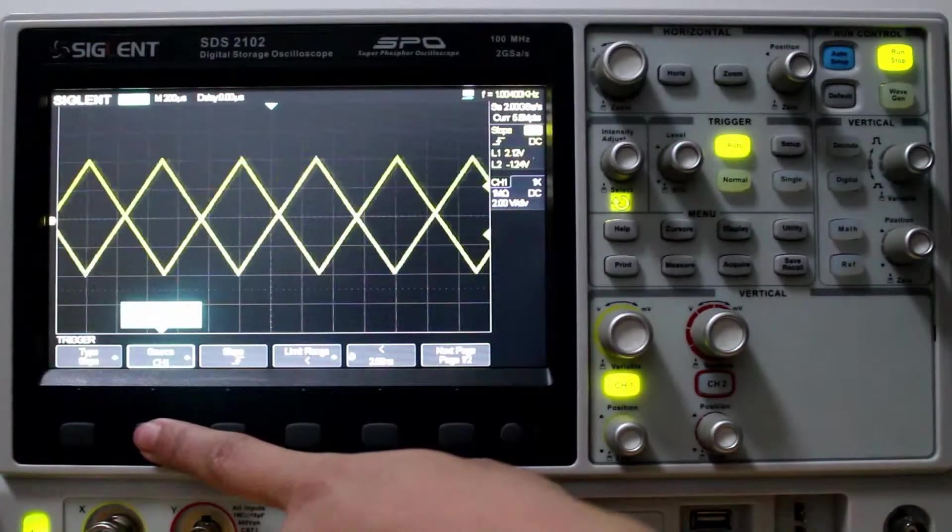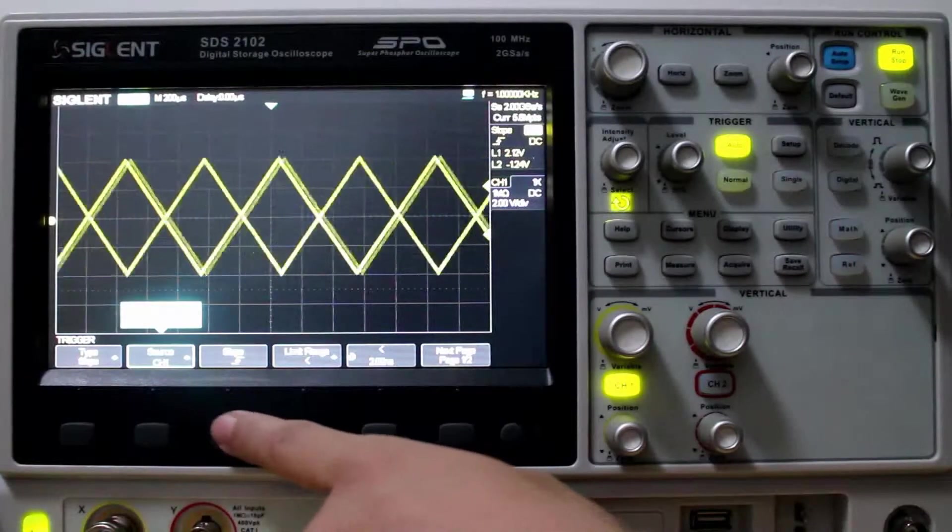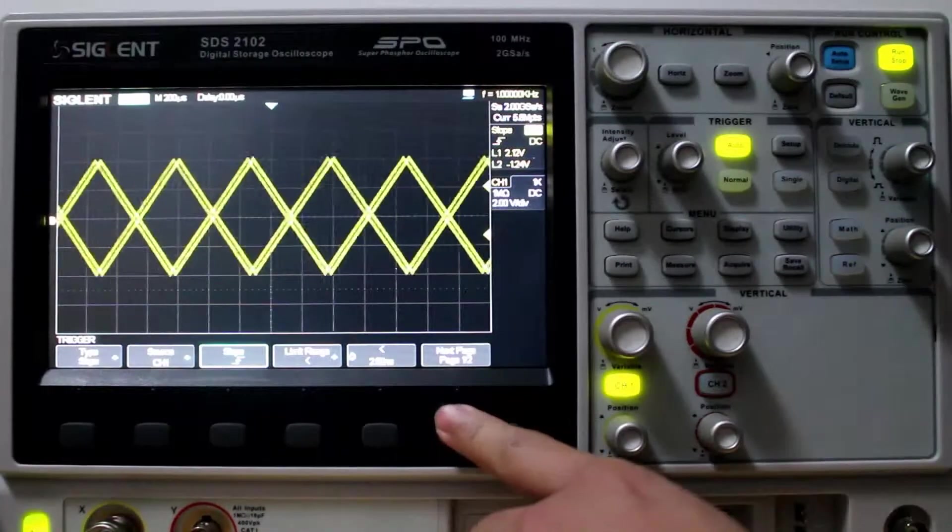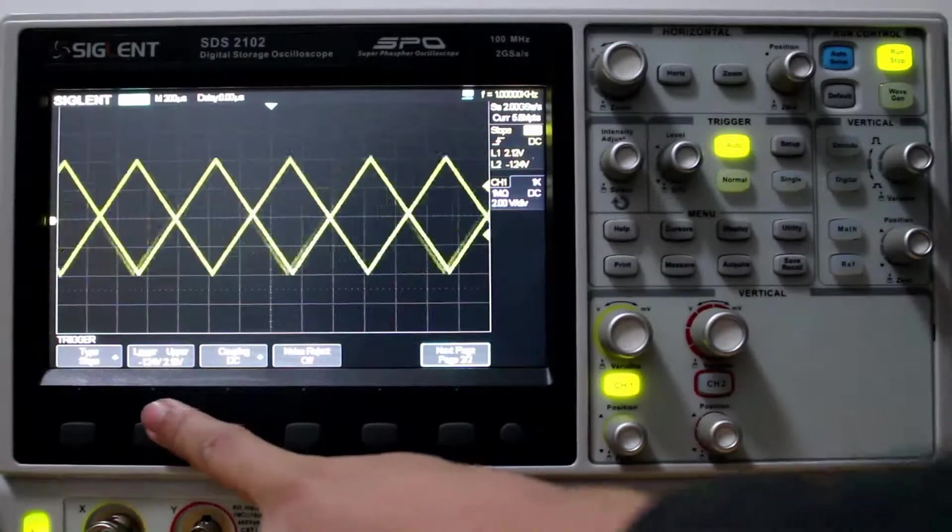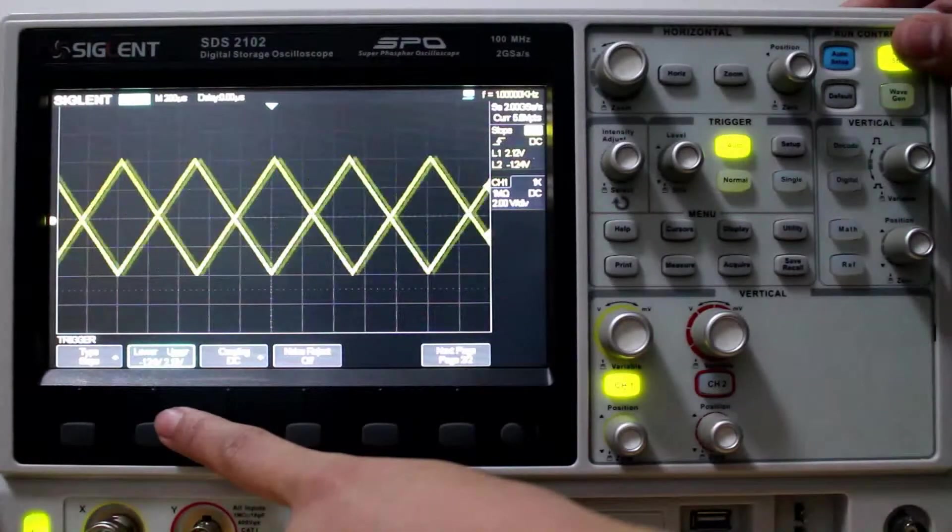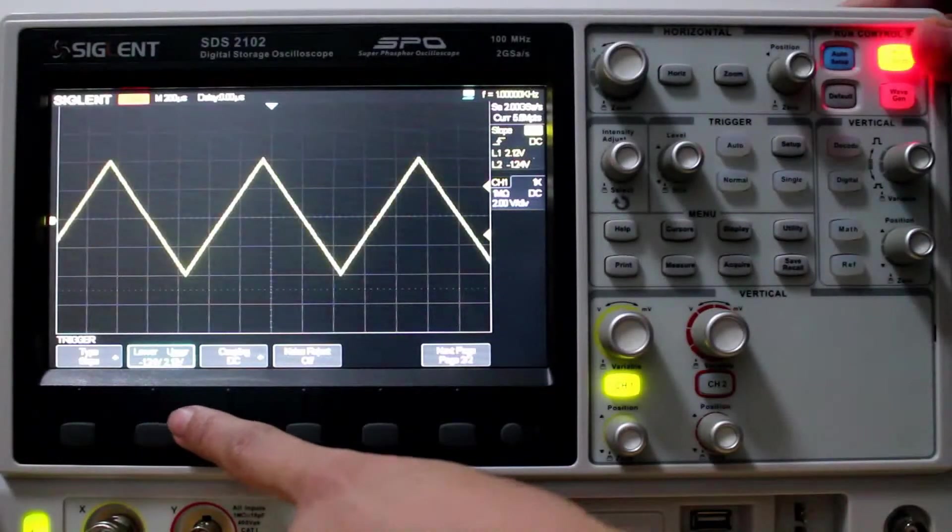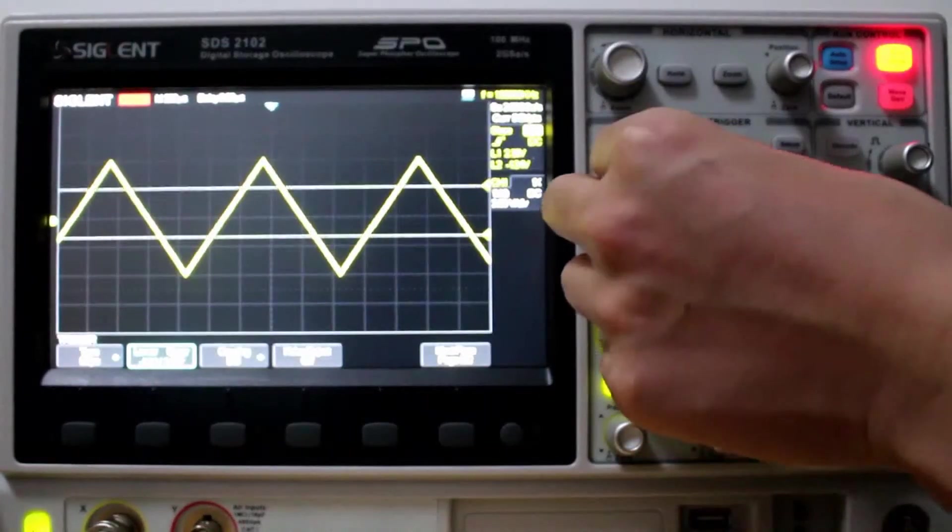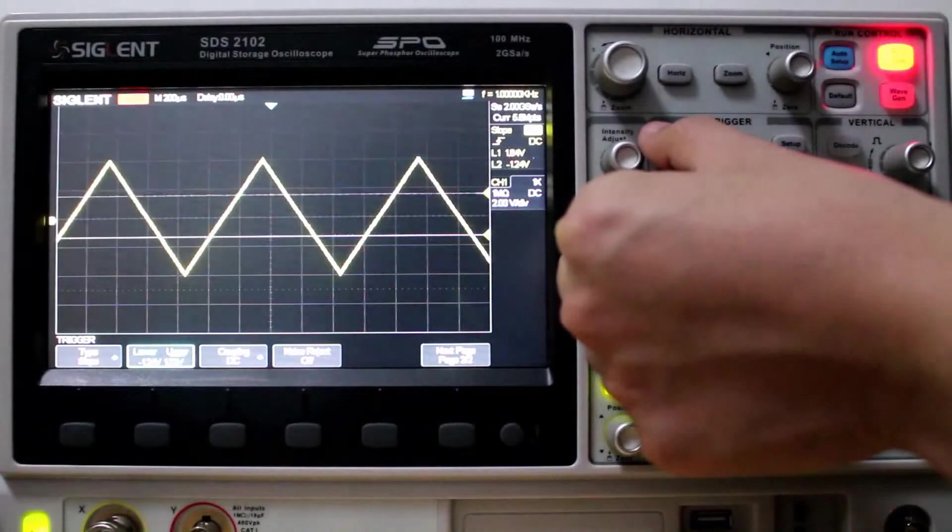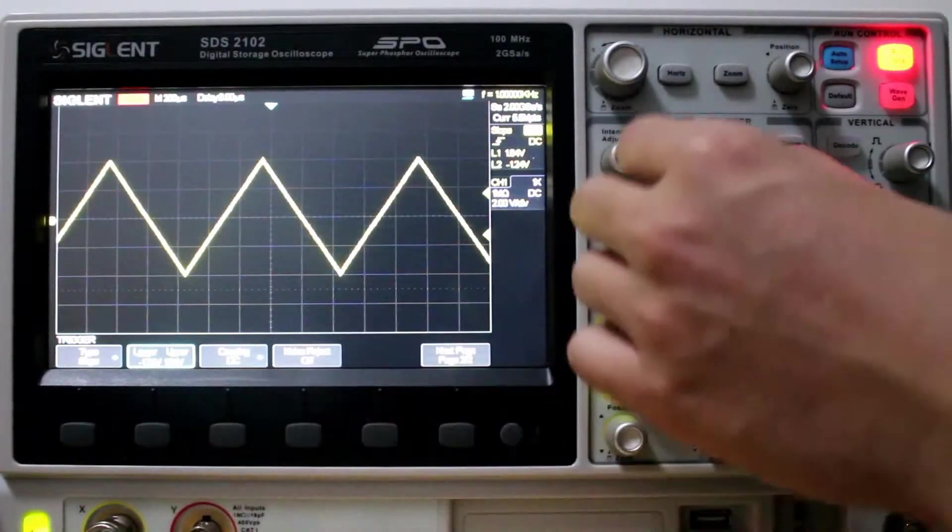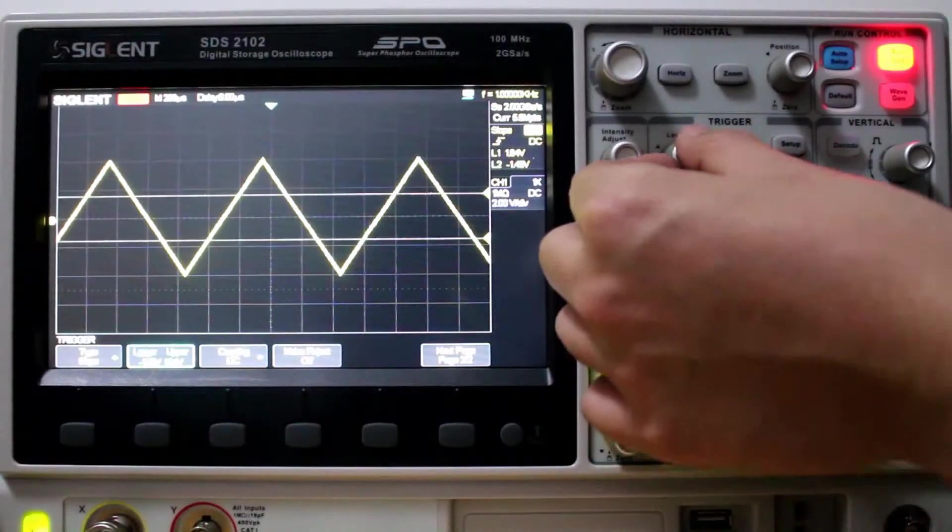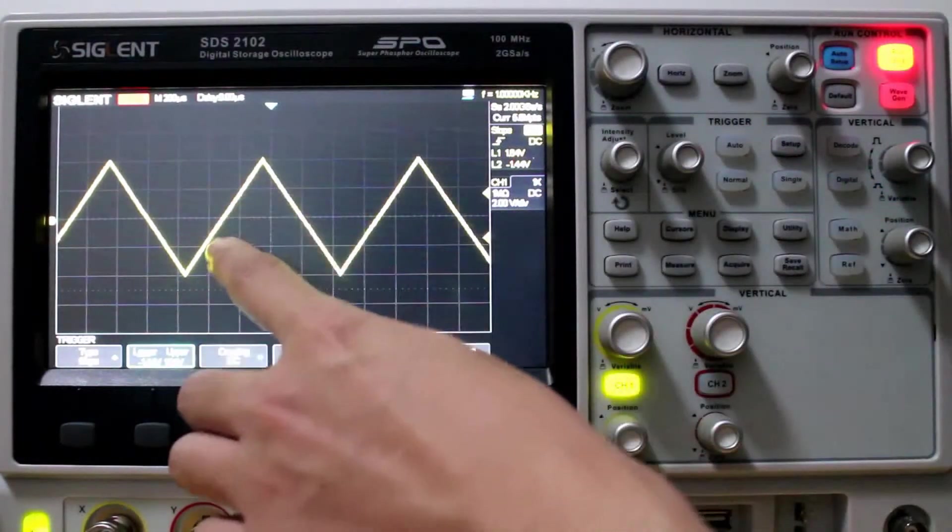Now we're looking at the Slope trigger type. Channel 1. Good. Rising. Let's go to page 2. And we can see we can set, with a Slope trigger type, we can set the upper and the lower range. So we're at 2.12 volts for the upper. And the lower, let's adjust the upper. Now the lower, 1.52 volts, negative.